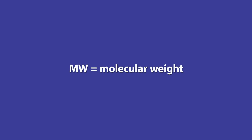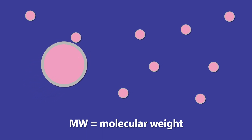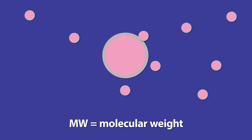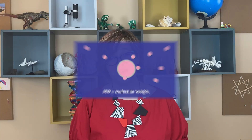Last, but certainly not least, is MW — molecular weight. Large things are going to move much slower than small things. The bigger something is, the more likely it is to bump into things in the environment, and that's going to slow it down. So if you were trying to exit the concert wearing one of those giant T-Rex costumes, it would be way more difficult than if you were just trying to exit in your normal clothes.